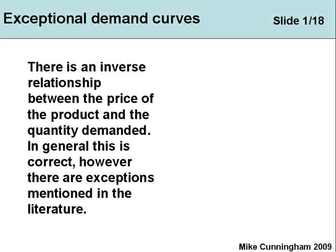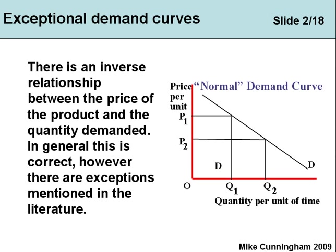In this video we're going to talk about exceptional demand curves. The majority of demand curves slope downwards — in other words, at a high price we buy less than at a low price; at a low price we would buy more. But there are exceptions. Our normal demand curve would be something like we've got here: as the price falls from P1 to P2, the quantity demanded increases from Q1 to Q2. As the price falls, it's cheaper, so we buy more.